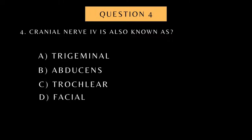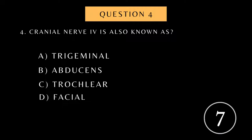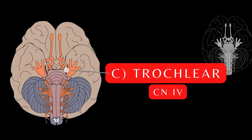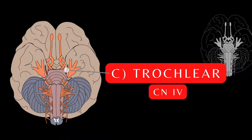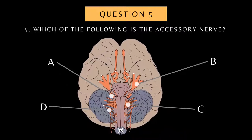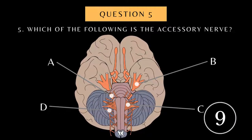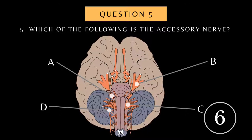Cranial Nerve 4 is also known as? Which of the following is the Accessory Nerve? Cranial Nerve 4 is also known as Cranial Nerve — which number?